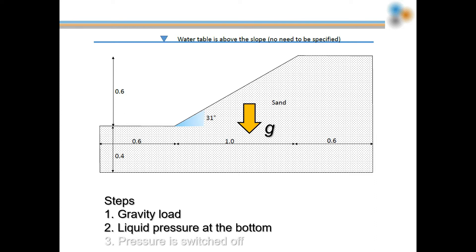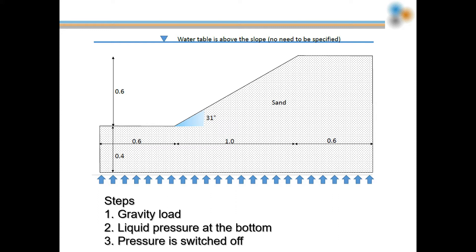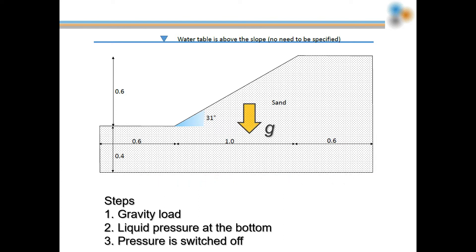Then, a liquid pressure is applied at the bottom of the slope for 0.05 seconds, which decreases the effective stress, inducing the failure of the slope. And finally, the applied pressure is switched off and the slope stabilizes.